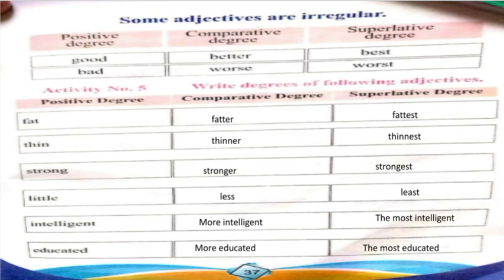Activity number 5: write the degrees of the following adjectives — Positive Degree, Comparative Degree, and Superlative Degree.